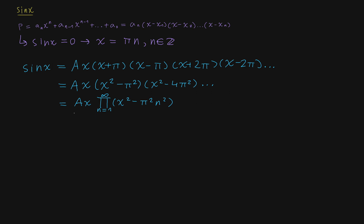The problem here is that just the zeros themselves cannot accurately represent the function — we still need the leading coefficient. If you take a look at the Maclaurin series, you can see that the coefficients get smaller and smaller; they approach 0. So there is a hint that maybe this leading coefficient A might be infinitesimal.